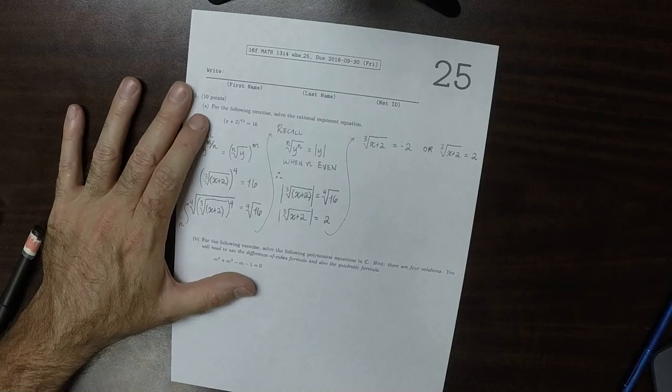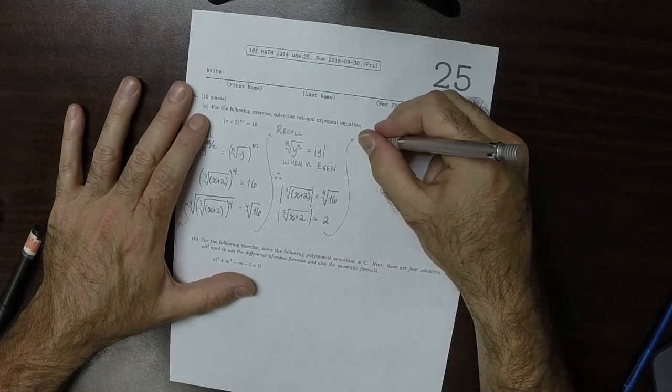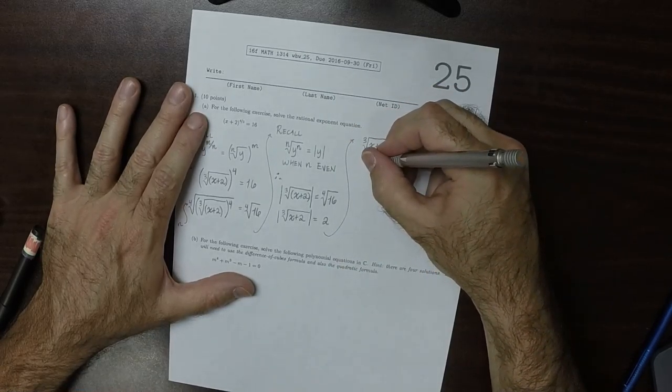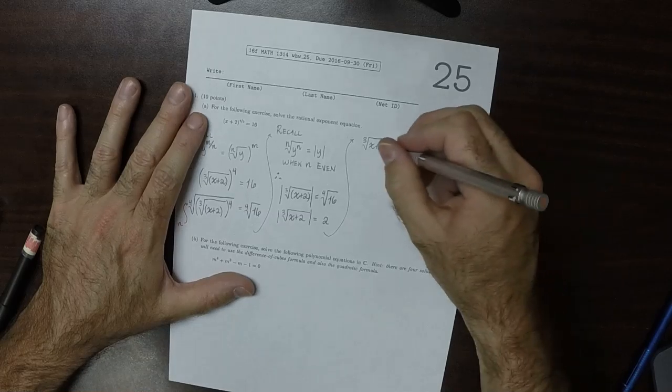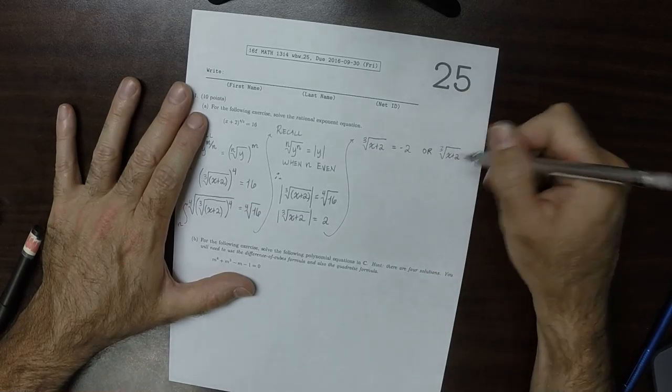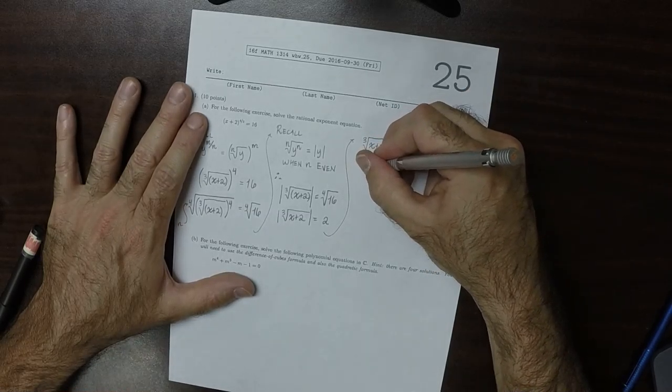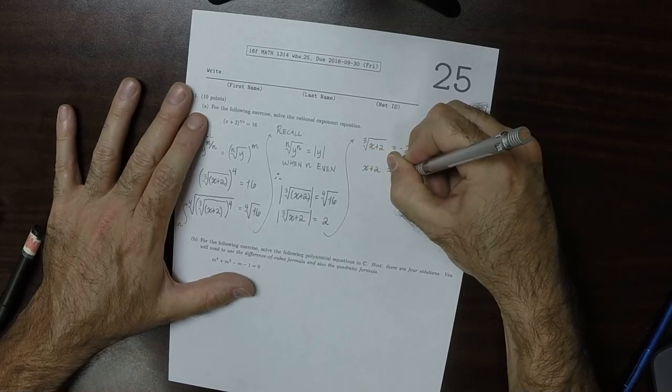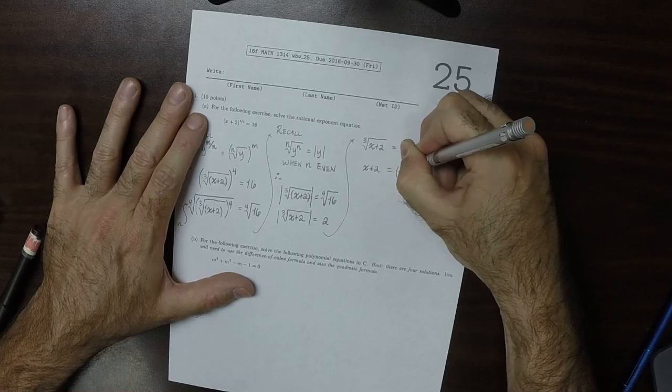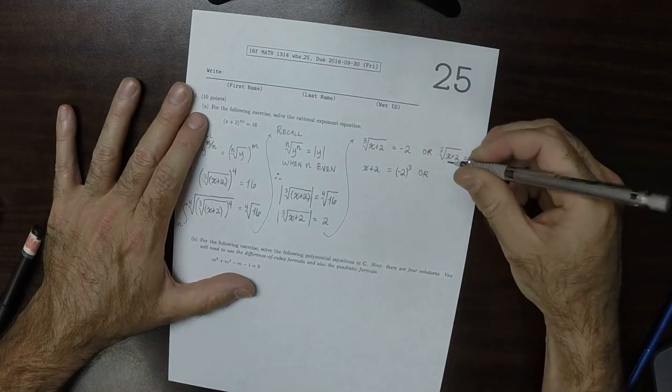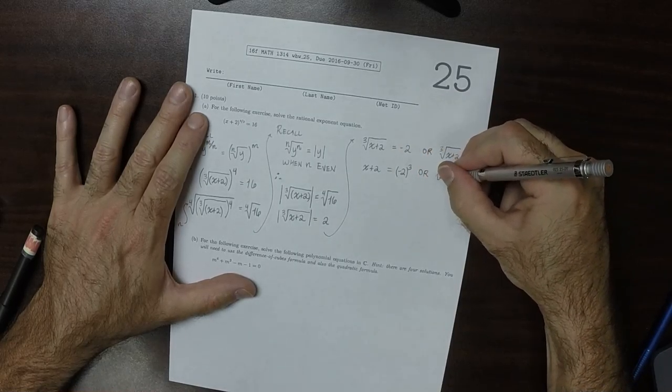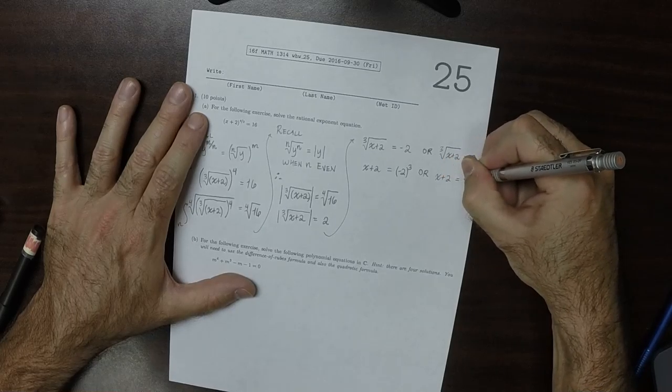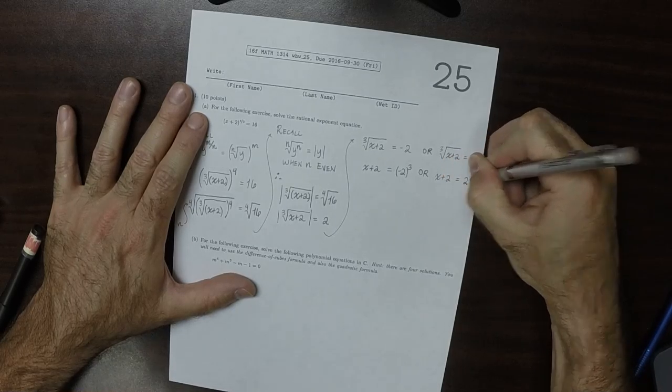Now, in either case, to get rid of the radical on the left-hand side, you move it to the right-hand side as an exponent. So x plus 2 equal to negative 2 cubed, or x plus 2 equal to 2 cubed.